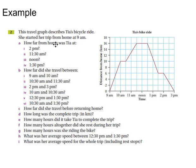Number one: How far from home was Tia at 2pm? So we go along the bottom, find 2pm, go up to the line. Here's the line, go across. And what's that? That's 6km.